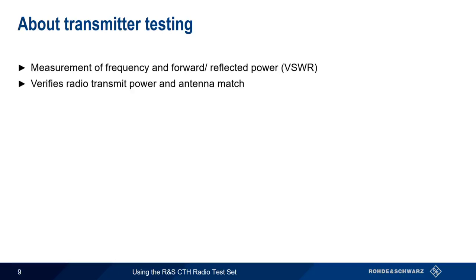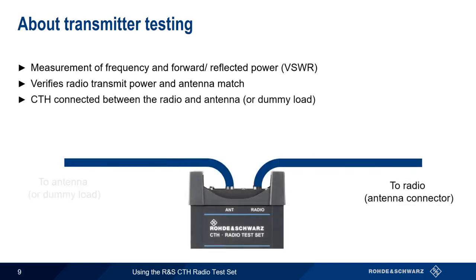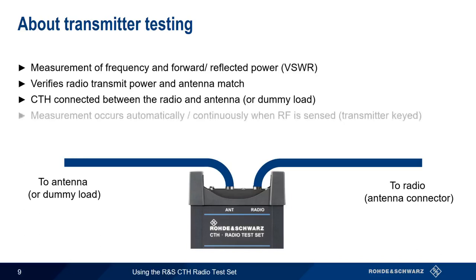Transmitter tests allow you to both verify the output power of the radio under test, as well as evaluate how well the transmitter and antenna are matched in terms of impedance. For the transmitter test, the CTH is connected between the radio and the antenna or dummy load. Measurements are made automatically and continuously while the transmitter is being keyed.